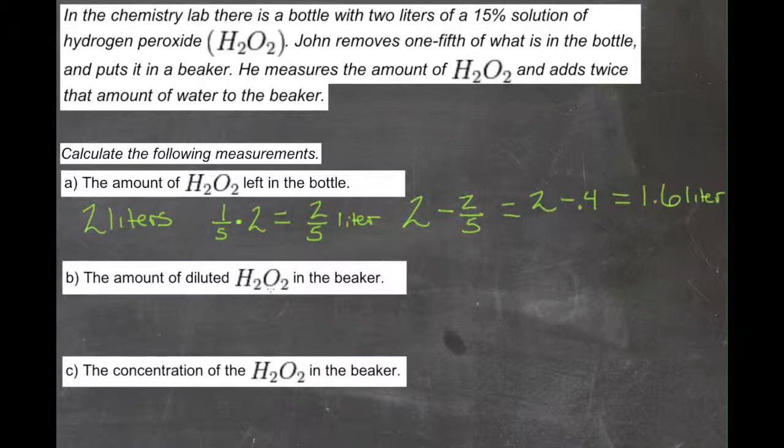Now the amount of diluted H2O2 in the beaker. He said that he took out two-fifths of a liter, which we calculated just a minute ago, and we put that in the beaker. So we had two-fifths in there already. And then it says that he measured the amount of H2O2 and added twice that amount of water to the beaker.